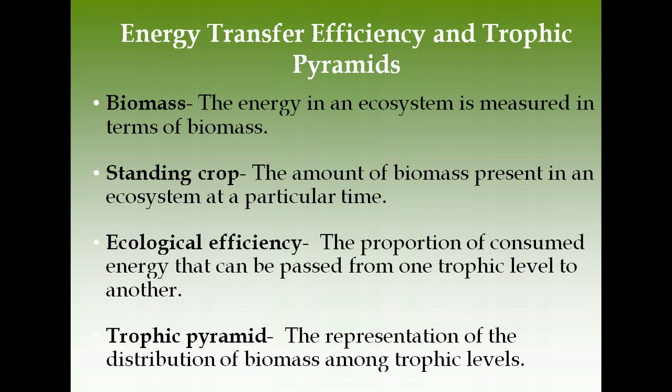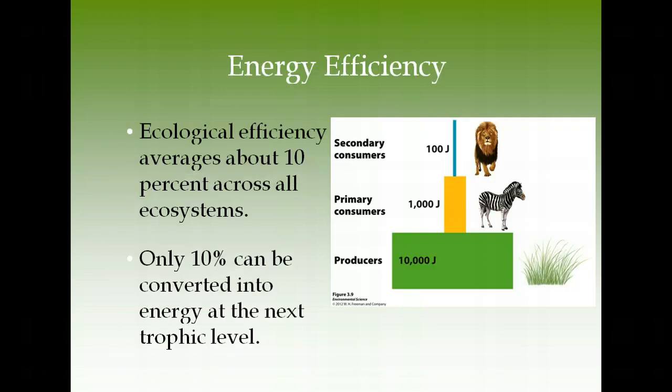You can represent ecological efficiency and distribution of biomass on a trophic pyramid. Producers have the largest amount of energy; only 10% is passed to the next trophic level at each step. Although efficiency varies by ecosystem, the shape of the pyramid looks similar across them. This makes sense structurally: there is far more grass than primary consumers, more primary consumers than secondary, and more secondary than tertiary.